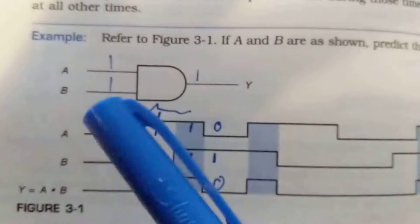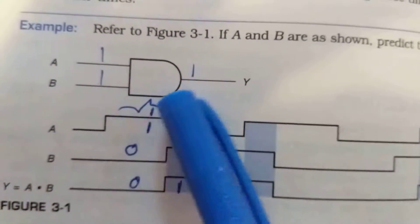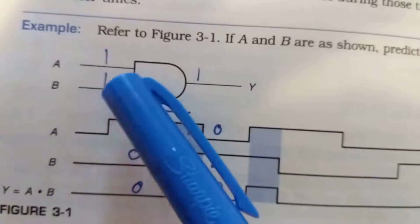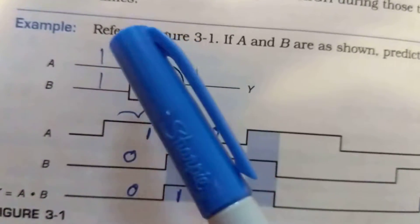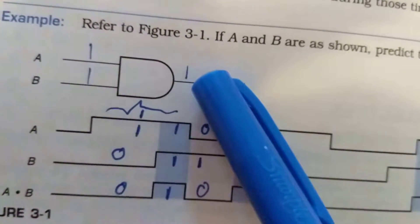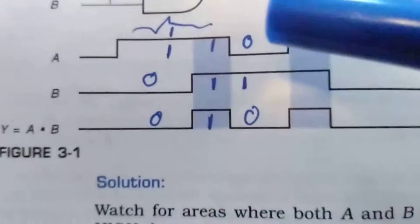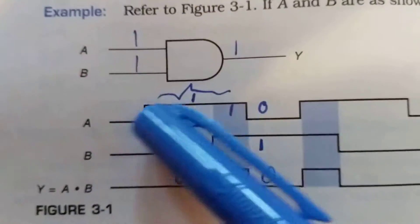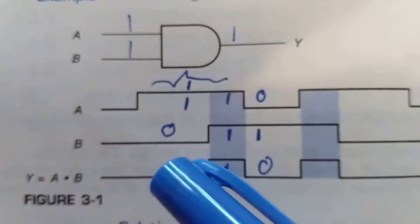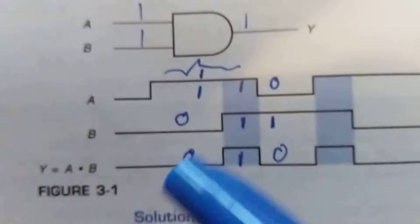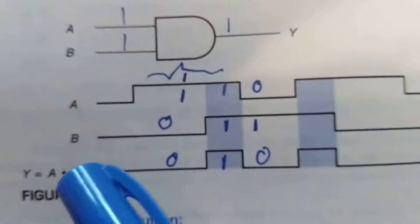Let's start with a regular AND gate. We know we need both inputs to be ones, so when this is one and this is one the output will be one. With respect to time, A would be one input, B would be another input, and Y would be the output.